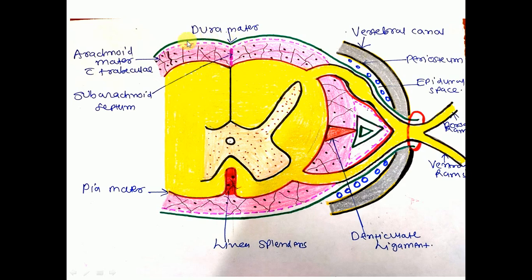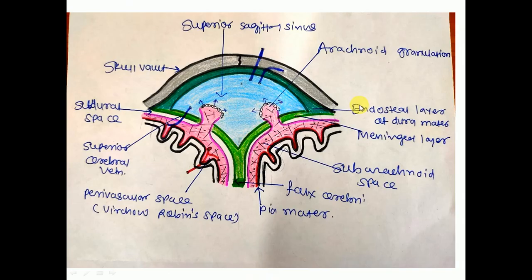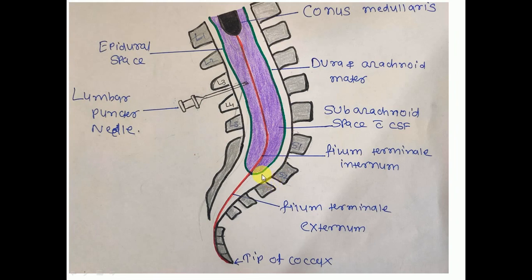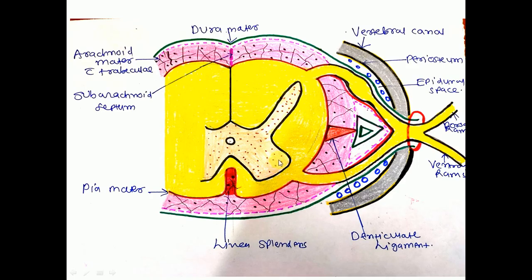Coming back to the dura mater of the spinal cord: the dura mater extends from the base of the foramen magnum to the level of the S2 vertebra, which is part of the sacrum. The sacrum is made up of five vertebrae which fuse with each other. In addition to that, the dura mater extends up to the level of the intervertebral foramen, where it fuses with the trunk of the spinal nerve and continues as the epineurium of the peripheral nerve.